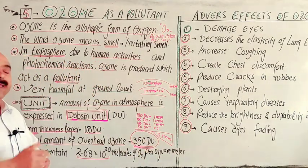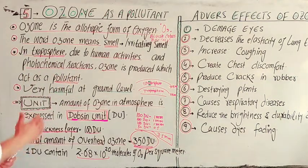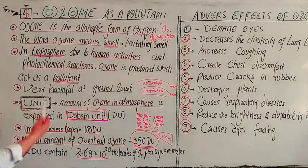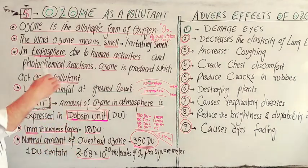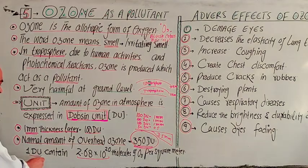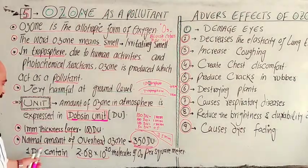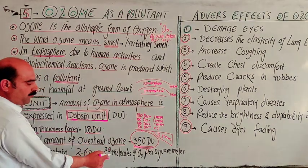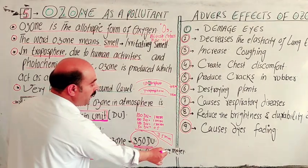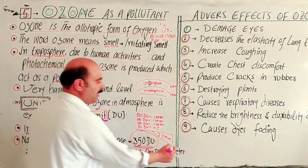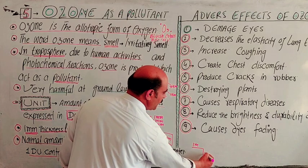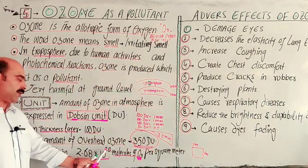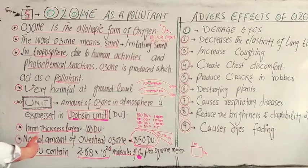The overhead ozone layer thickness is 3.5 mm. Important MCQ points: the unit is the Dobson unit; 100 Dobson units equals 1 mm thickness; and the normal amount of overhead ozone is 350 Dobson units. One Dobson unit contains 2.68 × 10²⁰ molecules of O₃ (ozone) per square meter, meaning for a 1 square meter area there are 2.68 × 10²⁰ ozone molecules present in 1 Dobson unit.